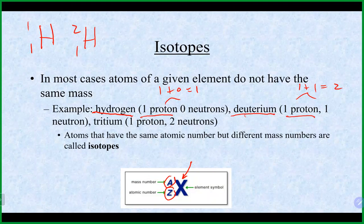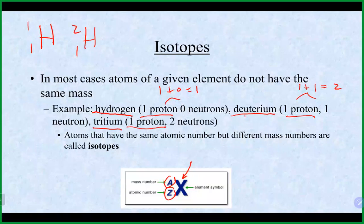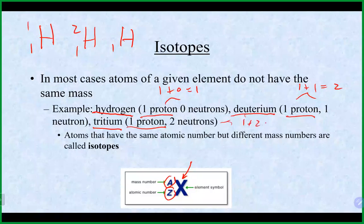For tritium with one proton and two neutrons, the atomic number is still 1, giving us hydrogen again, but the mass number is 1+2=3. So although they have three different names, they are all hydrogen — but they all have different masses because they each contain different numbers of neutrons.